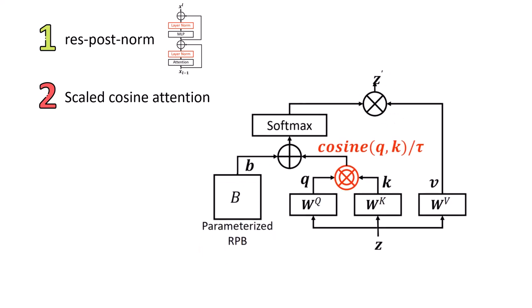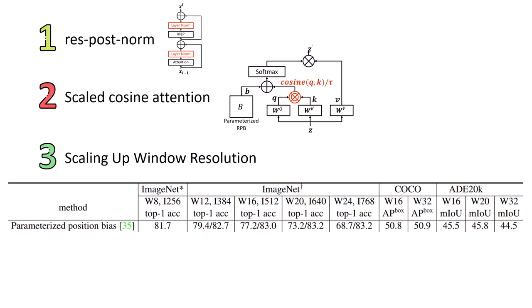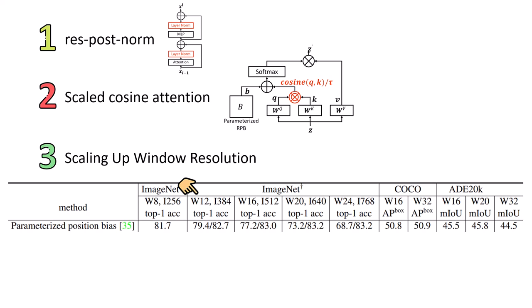The third modification, which is perhaps the most interesting, is scaling up the window resolution. They train the new Swin Transformer architecture — with res-post-norm and scaled cosine attention — on a window size of 8 with input resolution 256×256, achieving top-1 accuracy of 81.7%. Then they scale up by changing window size from 8 to 12 and input resolution from 256 to 384. Without any additional training — only at inference — they find the performance drops from 81.7 to 79.4.